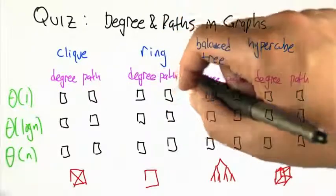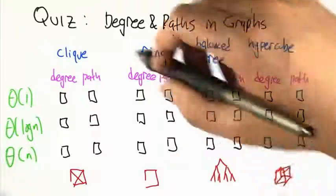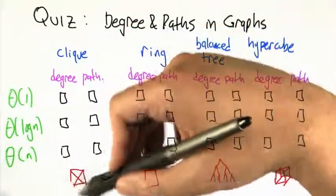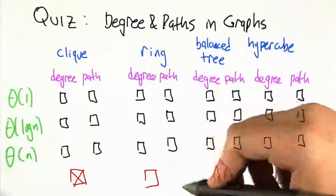So just to get you thinking about the degree of different graphs and the path lengths in different graphs, here's four different kinds of graphs we've talked about before. A clique, where all the nodes are connected to each other. A ring, where the nodes are connected into a ring.